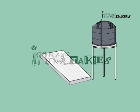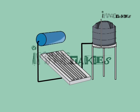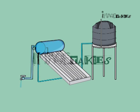A reservoir kept at a higher level stores water. This is connected to a small cylindrical tank kept at a slightly higher level above the heater. One end of the copper pipe is connected to the bottom of the small tank, with the other end connected near its middle. Water from the tank flows continuously through the pipe. The water absorbs heat and gets heated up. Hot water remains in the upper portion of the tank and can be drawn through a tap. Cold water from the reservoir tank replaces the hot water drawn.